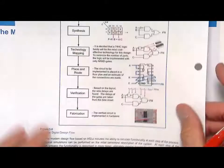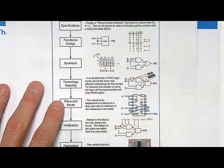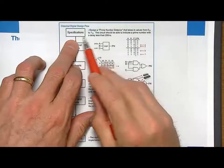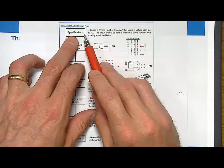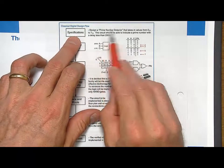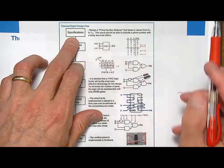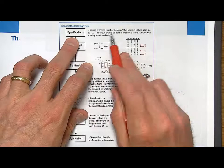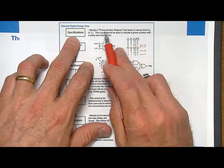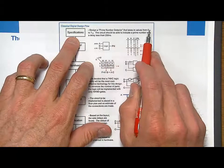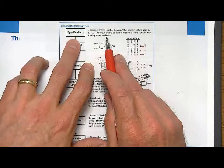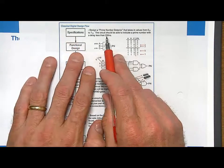Here's an example of the flow using discrete parts. For specifications, we're going to build a prime number detector. This is a classical digital design. We're going to implement it with discrete parts and do all the design by hand. We're going to have a prime number detector that takes in decimal numbers from 0 to 7, and it needs to be able to have a delay of less than 200 nanoseconds.